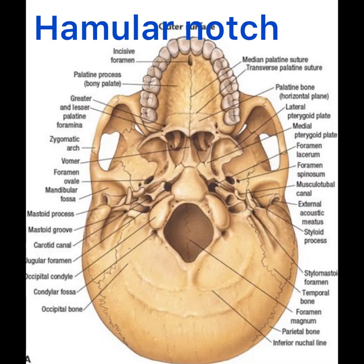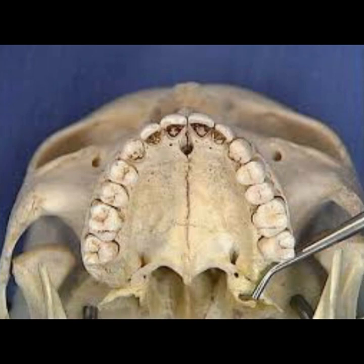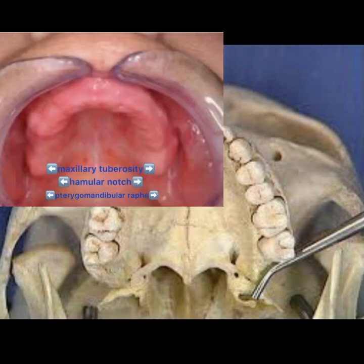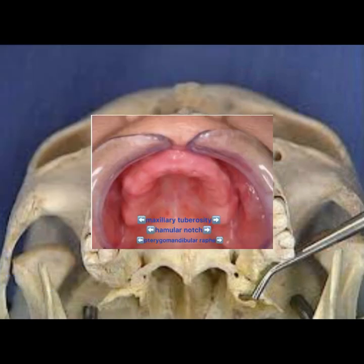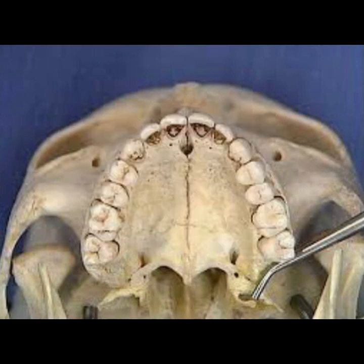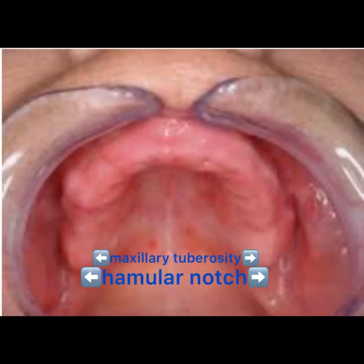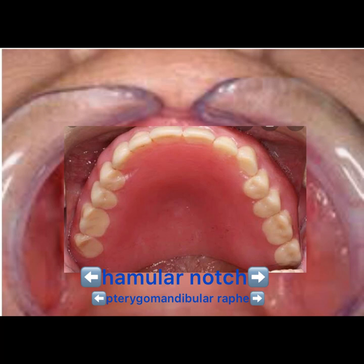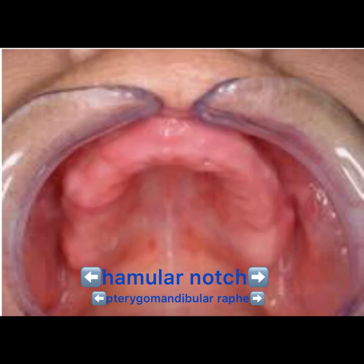The hamular notch is the depression seen between the maxillary tuberosity and the pterygoid hamulus. The pterygoid hamulus is a hook-like process at the extremity of the medial pterygoid plate of the sphenoid bone, and the maxillary tuberosity is the bulbous bony projection behind the last molar. The maxillary denture should extend only up to the hamular notch. If the denture extends beyond onto the pterygoid hamulus, which is sharp, spiny, and covered by very thin mucous membrane, it will cause pain, soreness, discomfort, instability, and looseness of the denture, especially when the pterygomandibular raphe is pulled or stretched during mouth opening.